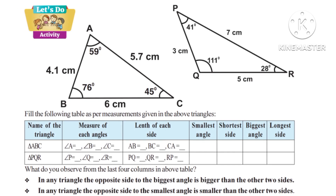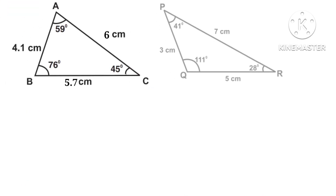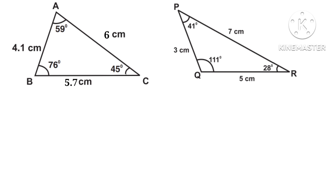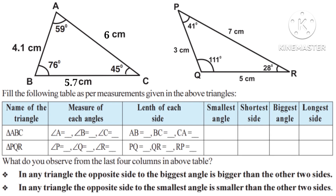Now let us do an activity. Let us take two triangles: triangle ABC and triangle PQR. Fill the following table as per measurements given. In triangle ABC, angle A is 59 degrees, angle B is equal to 76 degrees, angle C is 45 degrees. The length of AB is equal to 4.1 cm, BC is equal to 5.7 cm, and AC is equal to 6 cm.